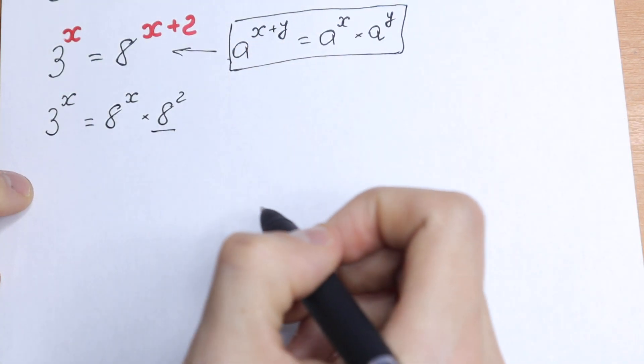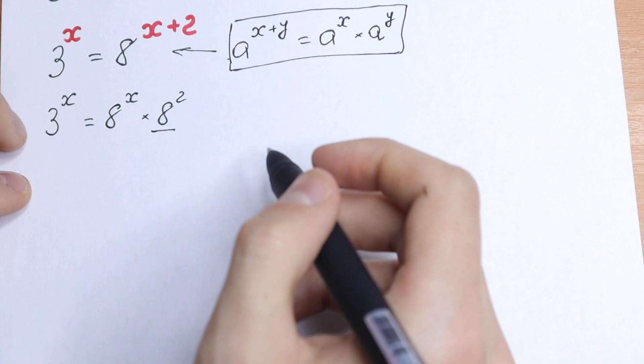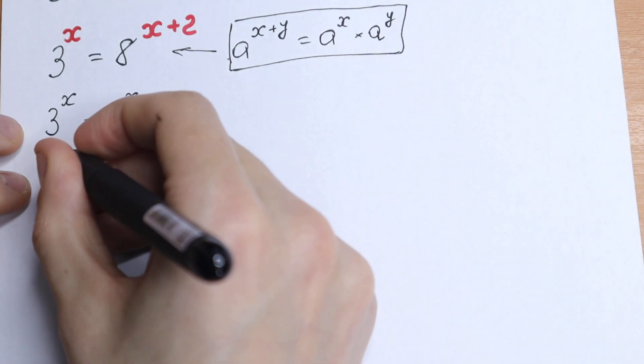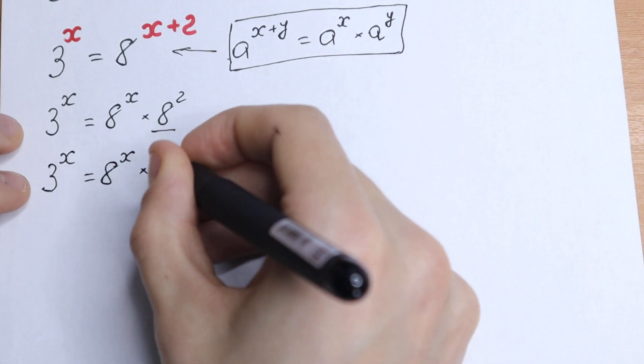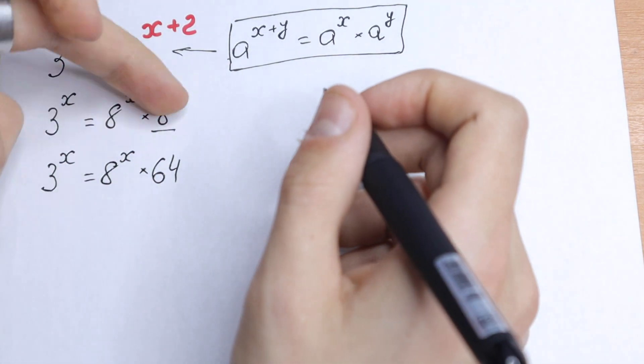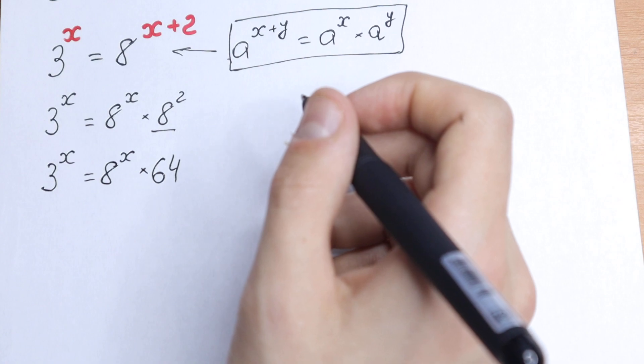Okay, we can simplify this one. We will have 64, so let's do this. We will have 3 to the power x equal to 8 to the power x times 64, because 8 square is equal to 64.